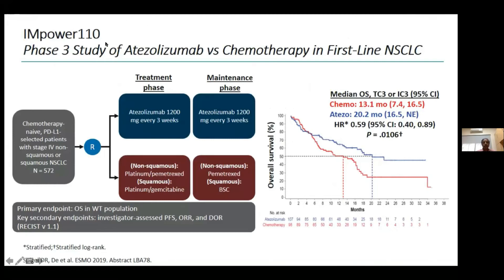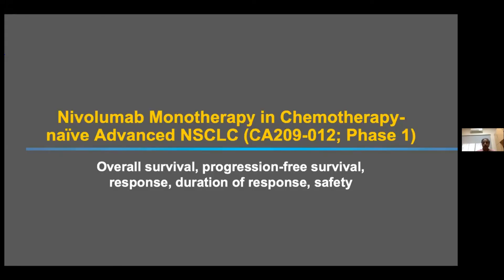IMpower-110 is a Phase 3 study of atezolizumab versus chemotherapy in first-line, either squamous or non-squamous, in chemotherapy-naive patients. One arm receives atezolizumab and there are maintenance arms to continue. The median overall survival was reported with a significant hazard ratio of 0.59 for atezolizumab: 20 months median OS for atezolizumab versus just over 13 months for chemotherapy.